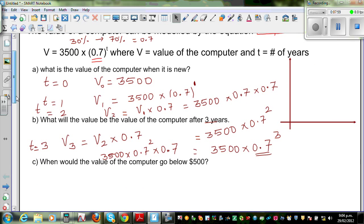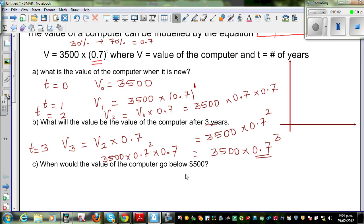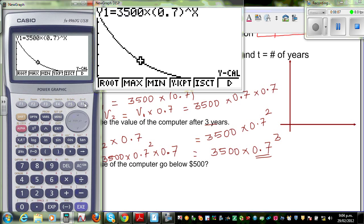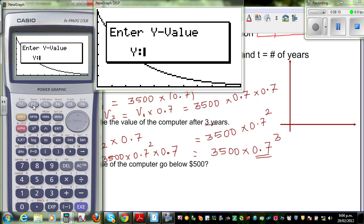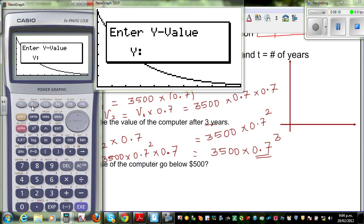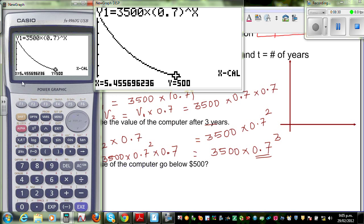And the third question was, when would the value of the computer go below 500? So, I'll find exactly 500 first, and then I'll answer it. So, this is G solve, and I want to find x calc, because we want to find the time. So I exit, draw, G solve, I want to find x calc. So, your y value is 500. So, we want to find, after how many years, would the computer become exactly 500? So, it tells me, it becomes exactly 500 at 5.455 years.